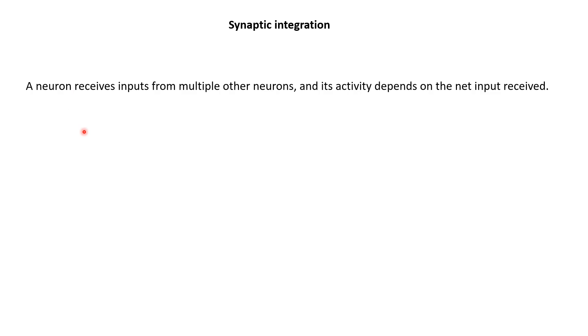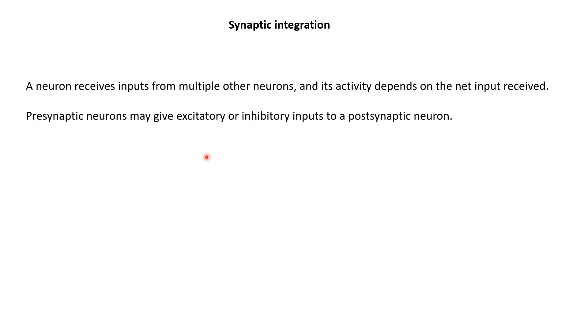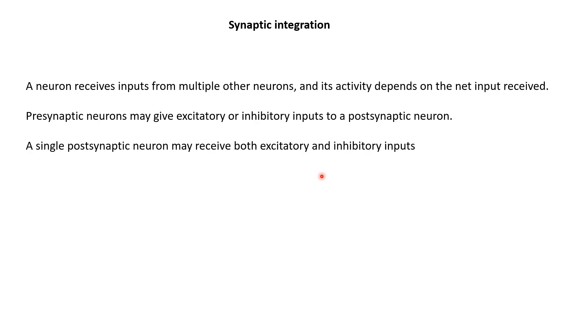A neuron may have multiple dendrites and each of these dendrites may form multiple synapses. So the final activity of the neuron will depend on all these inputs that the neuron is receiving. This combination or integration of all these inputs to determine the final activity of the neuron is known as synaptic integration. These inputs are basically the postsynaptic potentials generated in a neuron when neurotransmitters come and bind to its receptors. These postsynaptic potentials can be excitatory EPSPs or inhibitory IPSPs. So the same neuron can receive both excitatory and inhibitory inputs, and inputs can vary in terms of their polarity.